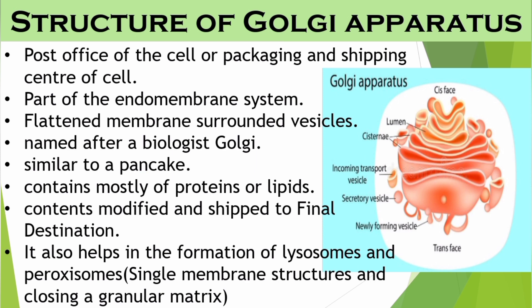A biologist named Camelo Golgi discovered this organelle. It looks similar to a pancake. It contains mostly proteins or lipids. The contents are modified and shipped to the final destination — that means they are modified and sent from the endoplasmic reticulum. It also helps in the formation of lysosomes and peroxisomes.